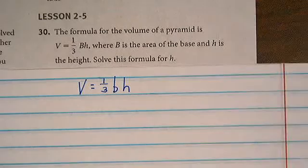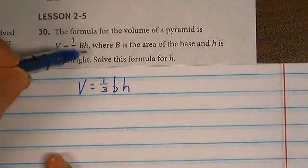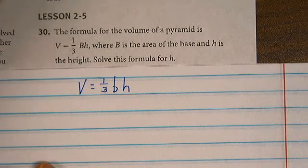Problem 30. The formula for the volume of a pyramid is volume equals one-third base times the height, where B is the area of the base and H is the height.